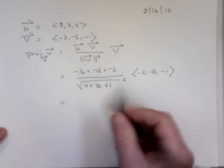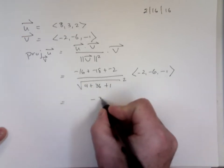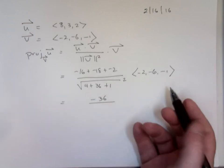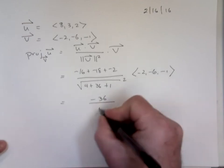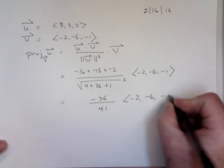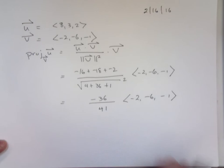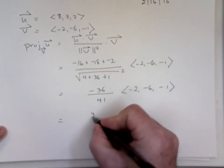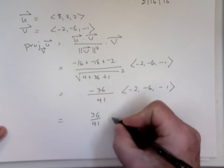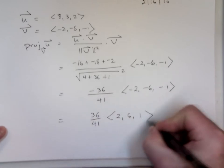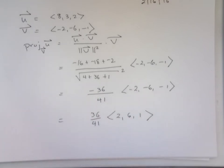This is nasty looking. We've got a negative 36 over 41. Square root of 41 squared is 41. Negative 2, negative 6, negative 1. My feeling is at least take a negative out of there and make it this. But either way should be okay.